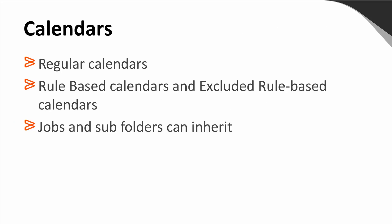Now let's talk about calendars. Smart folders use rule-based calendars and folder rule-based calendars. Folder rule-based calendars are only available for the smart folder and jobs defined into that smart folder. Control M rule-based calendars are available for all entities on the Control M server. Rule-based calendars are created based on specific rules, and there is no need to define them year by year. Regular calendars are created based on days of the month and need to be defined year by year. It is possible to use rule-based calendars to exclude smart folders from ordering.